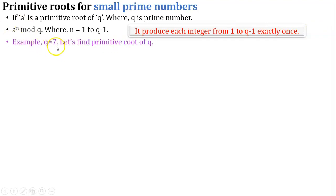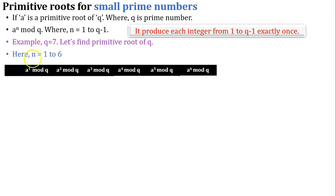For example, q is equal to 7. Let us find the primitive root of q. Here n equals 1 to 6 because n equals 1 to q-1, and q equals 7, so 7-1 equals 6. First, prepare a table based on the equation a raised to n mod q, where n equals 1 to 6. The value of q is 7 throughout all equations.